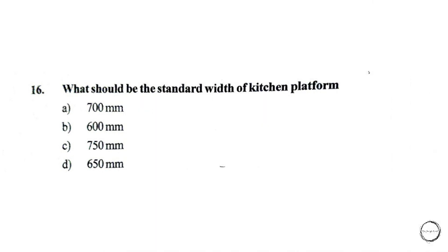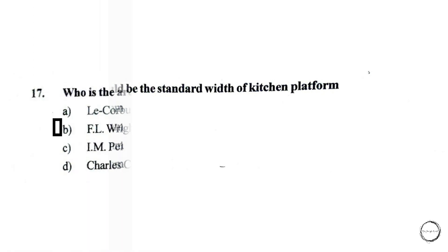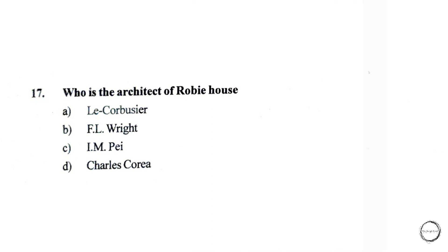Moving on, what should be the standard width of a kitchen platform? Options are: A) 700 mm, B) 600 mm, C) 750 mm, D) 650 mm. The right answer is option B, 600 mm.